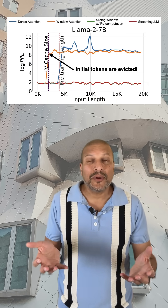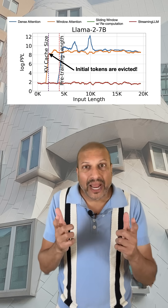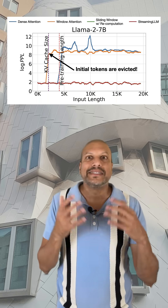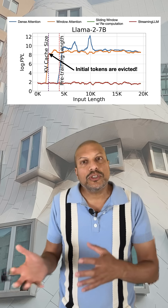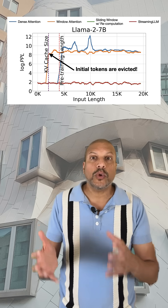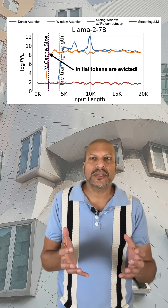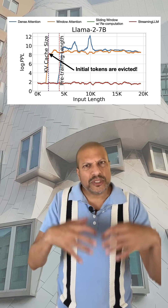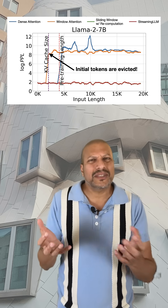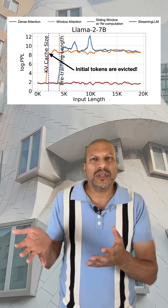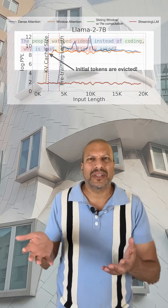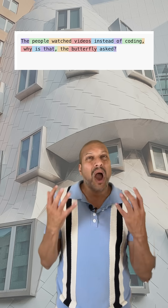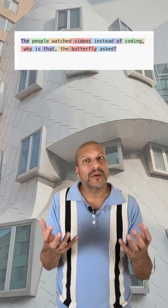Efficient on paper, but in practice it didn't work. As soon as the first few tokens left the cache, the performance dropped. And that was weird, because those first few tokens seemed trivial — it's the start of your sequence, words like 'uh' and 'the'. Why would removing them cause such a failure?